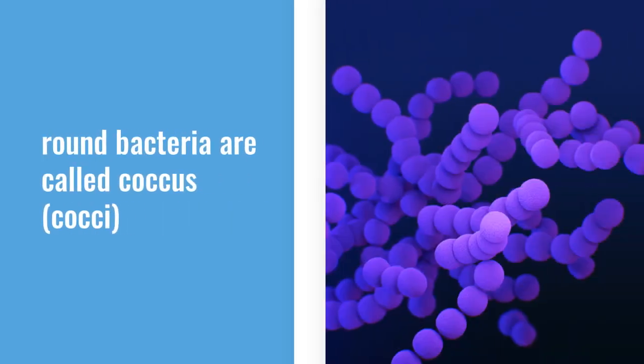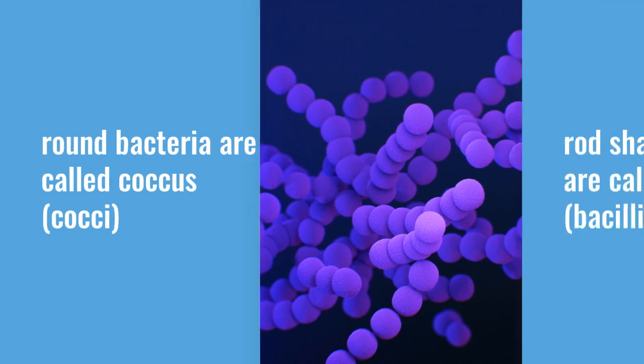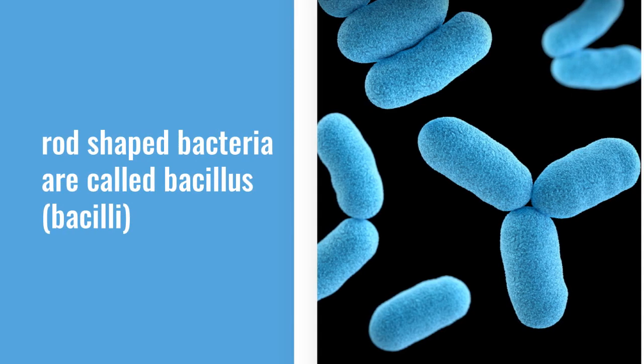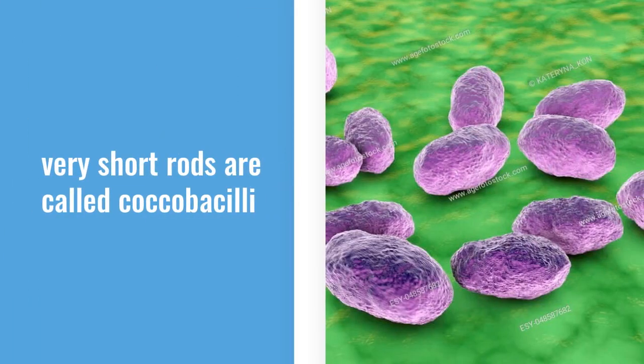Round bacteria are called coccus, that was singular, and cocci for the plural. Rod-shaped bacteria are called bacillus, or bacilli for the plural, often also called rods. If the rods are really short, then they're called coccobacilli, and E. coli is an example of that.